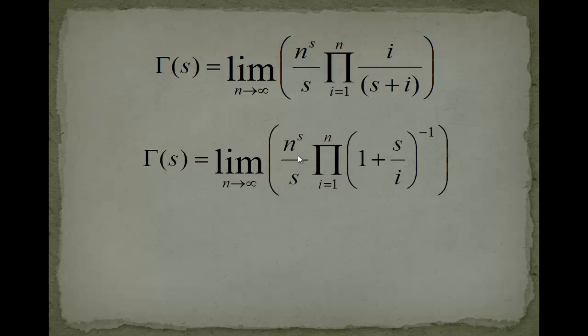Now you remember we had to have something with e to the minus gamma s. And the only thing that is left here is n to the s. So we have to manipulate this somehow in order to get something with e to the minus gamma s. So let's just do it.